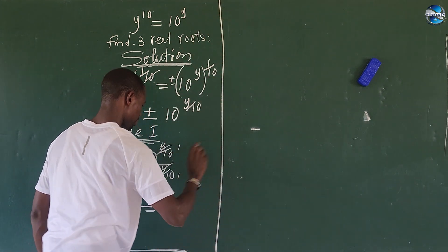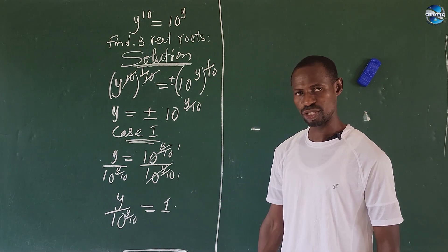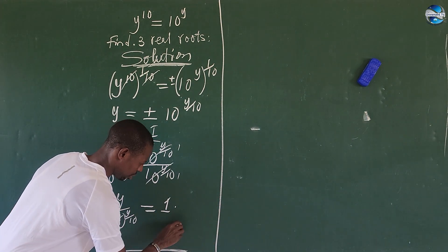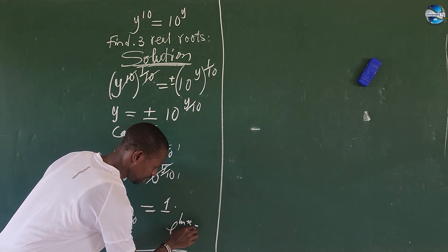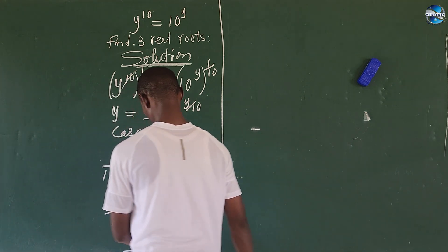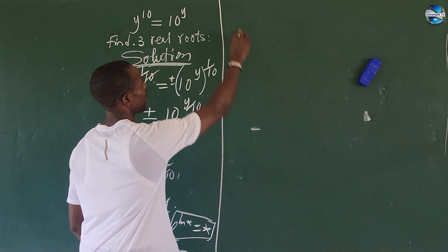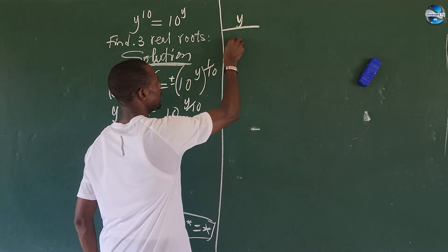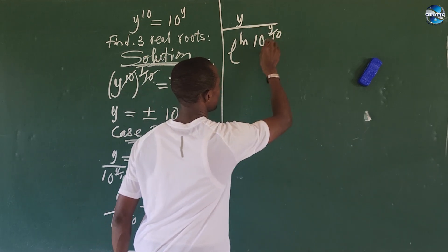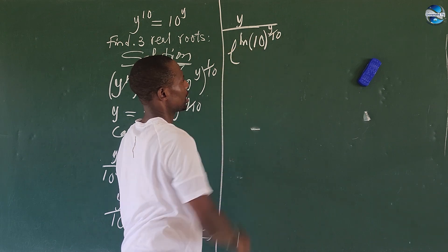Now we want to rewrite the denominator. We know that e^(ln(a)) = a, so we want to rewrite 10^(y/10) as e^(ln(10) · y/10). So our expression becomes: y divided by e^(ln(10) · y/10) equals 1.